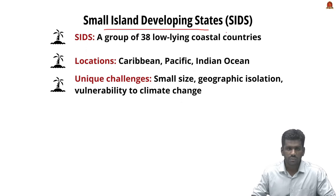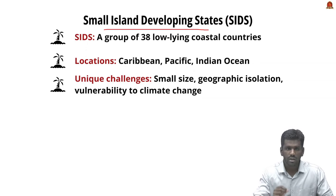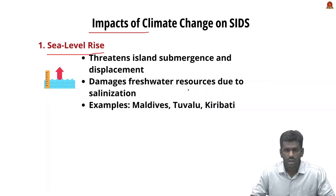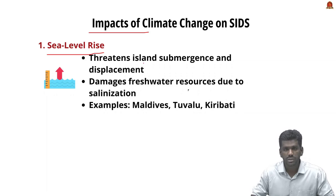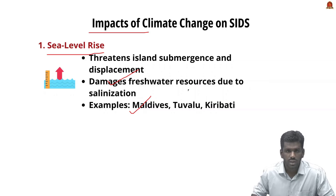Small island developing states are a group of 38 low-lying coastal countries primarily situated in the Caribbean, Pacific, and Indian Ocean regions. These nations face unique challenges due to their small size, geographic isolation, and vulnerability to climate change. The first major impact is sea level rise — small island nations are highly vulnerable to rising sea levels, which threatens to submerge entire islands and displace populations, while also damaging freshwater resources through salinization.